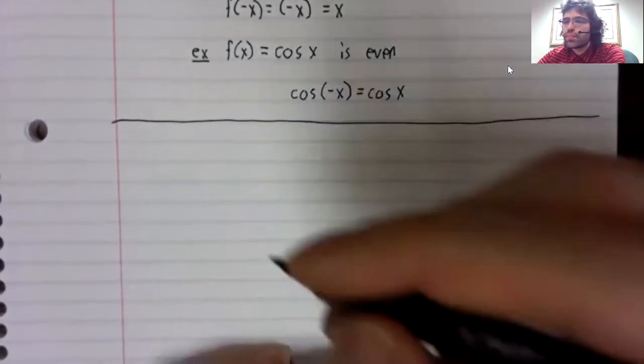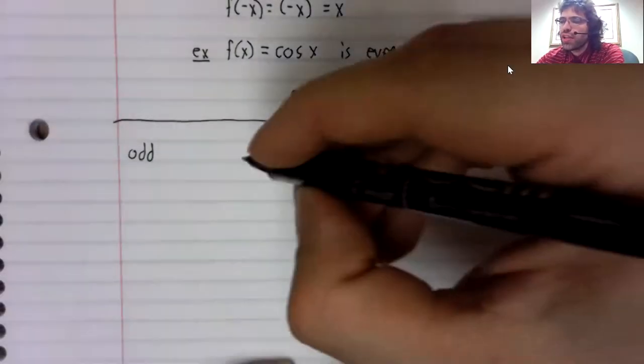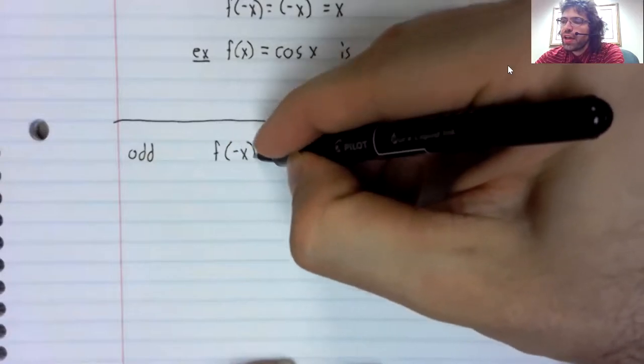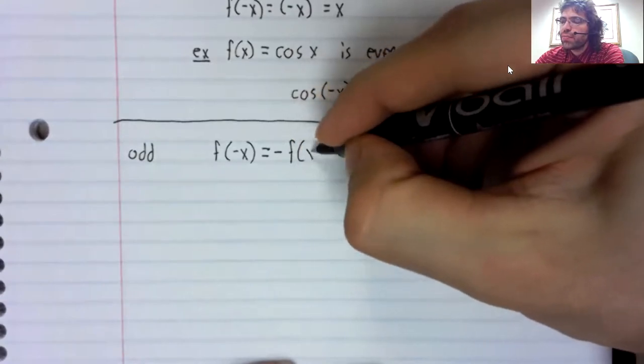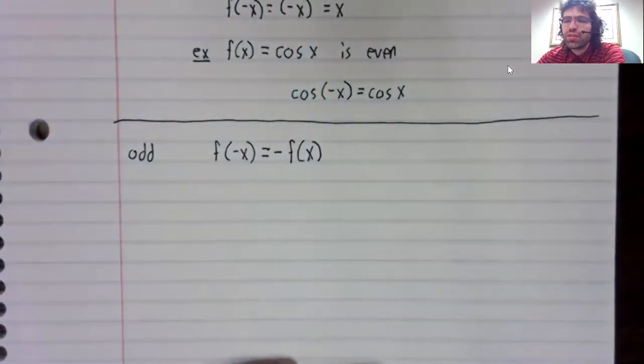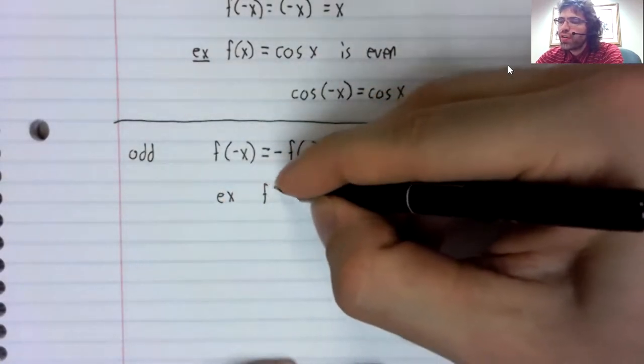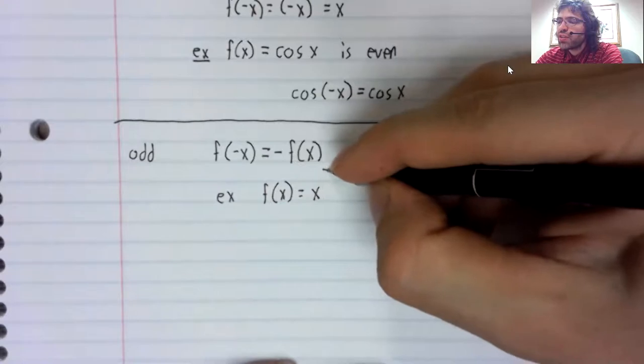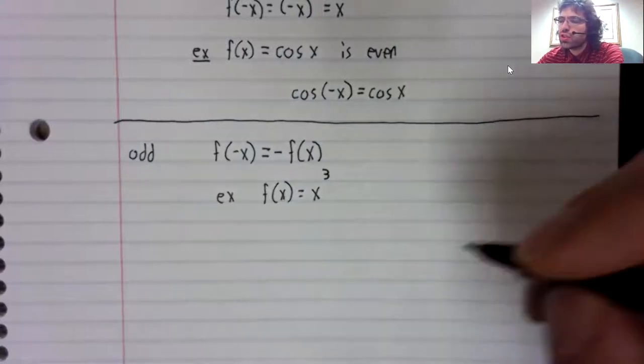Now, a function is odd, moving on to our second definition, if f(-x) equals negative f(x). And the example that gives odd functions their name: f(x) equals x raised to an odd power. For example, f(x) equals x cubed.